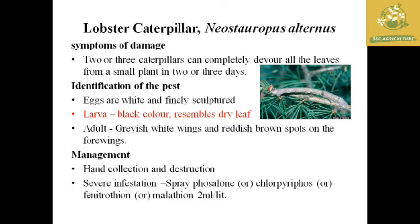The larvae are black in color and resemble a dry leaf, making them hard to identify when they stick to branches. The adult is a grayish-white winged moth with a reddish spot on the forewings. Management includes hand collection and destruction of larvae and eggs, and in severe infestations spraying with insecticides like phosphamidon, chlorpyrifos, or malathion at the recommended dosage of 2 ml per liter.